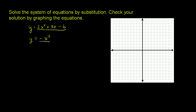So they're going to intersect when they both equal the same y, or when this thing is equal to this thing — when negative x squared is equal to 2x squared plus 3x minus 6. The x value at which these two are equal is going to be the x values where these y's are equal, so that's going to be their point of intersection. That will be an x and y pair that satisfies both of these equations.